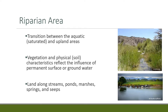A riparian area is that transition area between the aquatics and the uplands. It's unique because it has a unique set of soil characteristics and vegetation that are a result of being inundated by water for at least part of the season. It encompasses land along streams, ponds, marshes, seeps, and springs. Those definitions are from the PFC, or Proper Functioning Condition manual, which is available on the BLM and Forest Service websites.